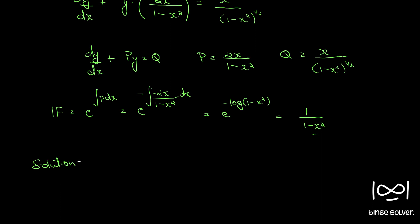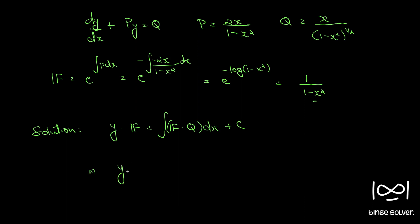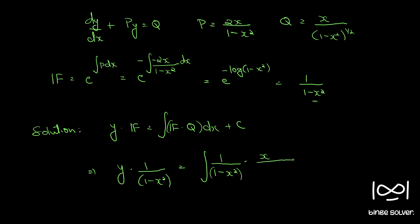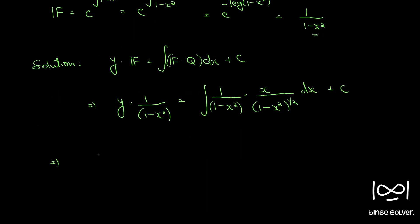The solution for a linear differential equation is given by y times the integrating factor equals the integral of the integrating factor times Q dx plus C. So we get y/(1 minus x squared) equals the integral of 1/(1 minus x squared) times x times (1 minus x squared), which simplifies to x/(1 minus x squared) to the power 3/2, dx plus C.